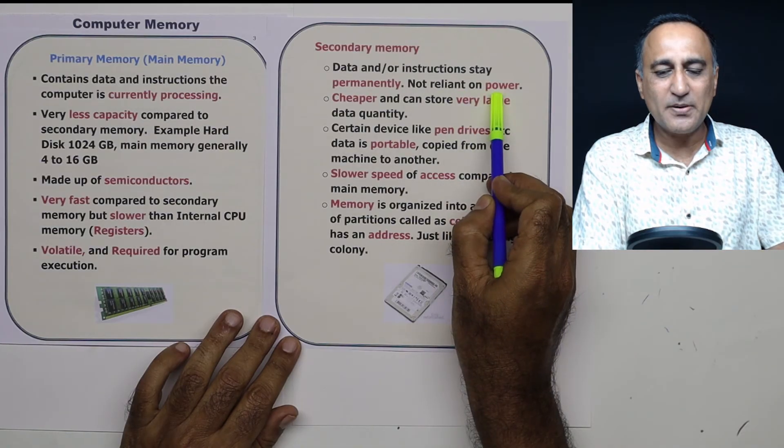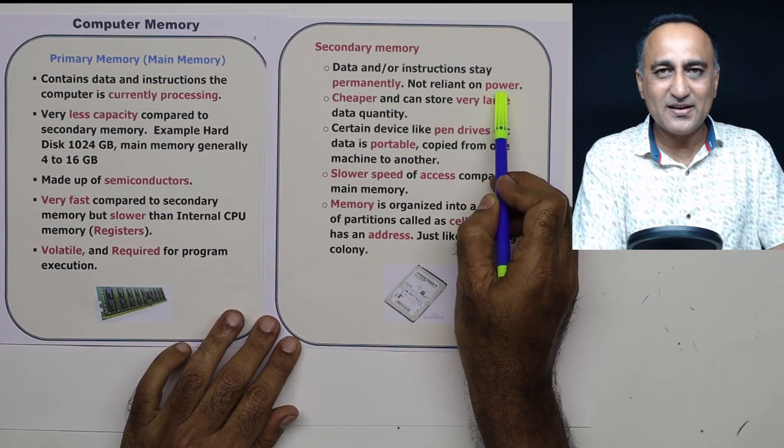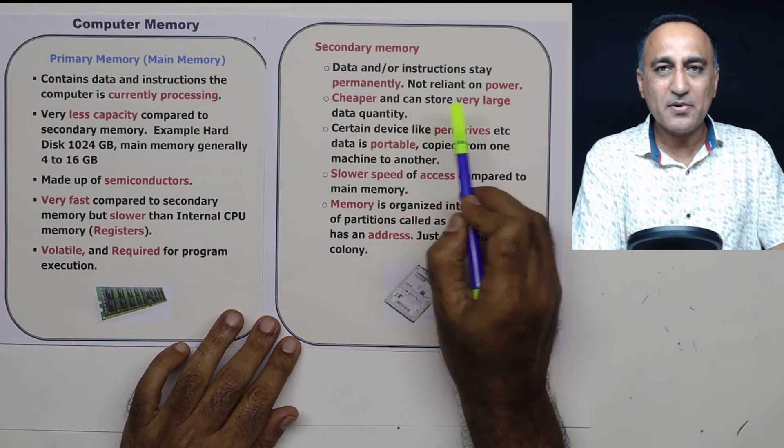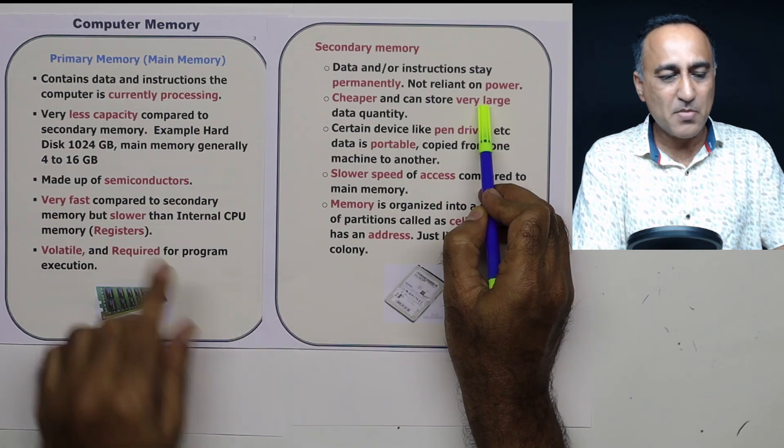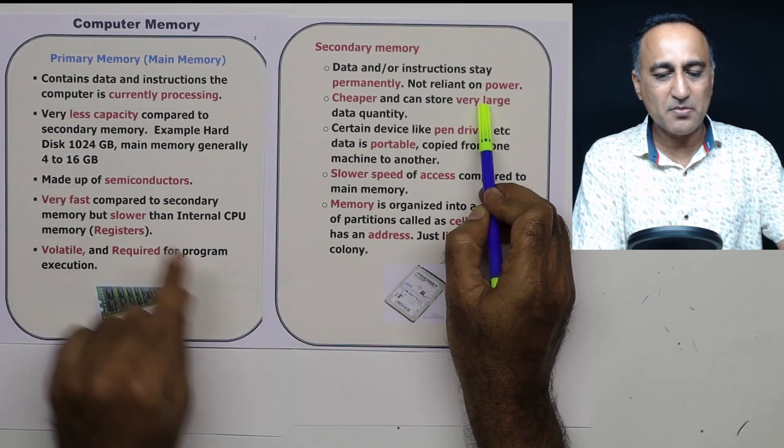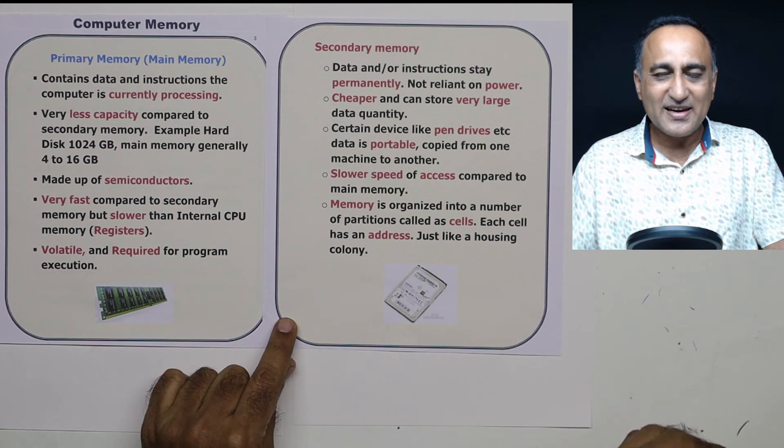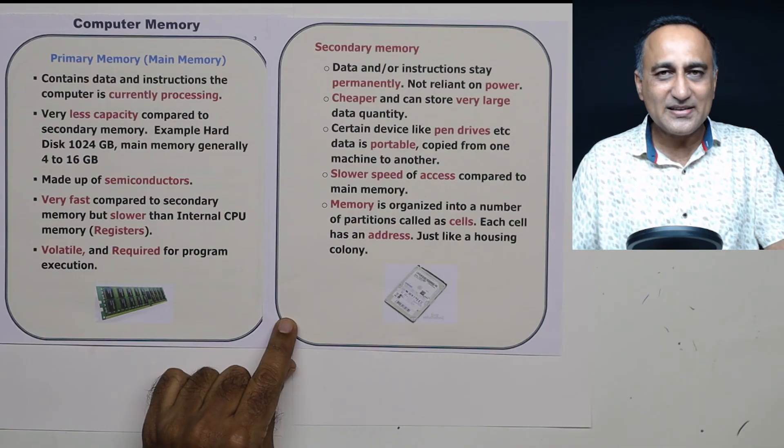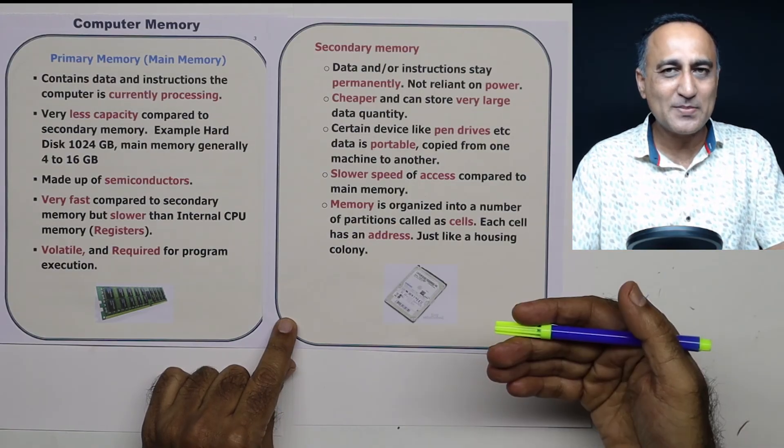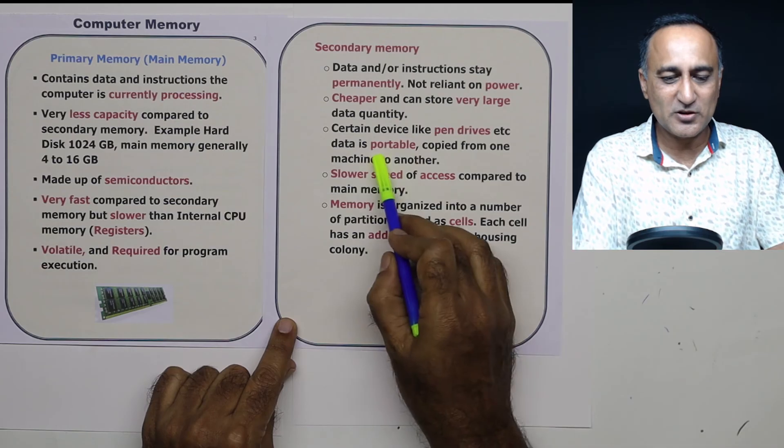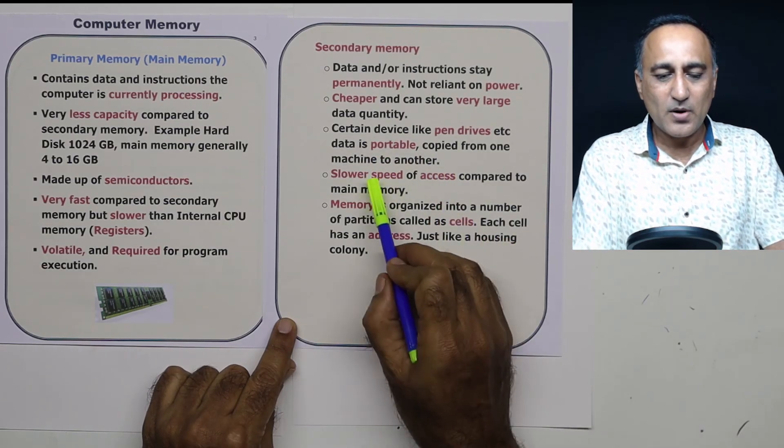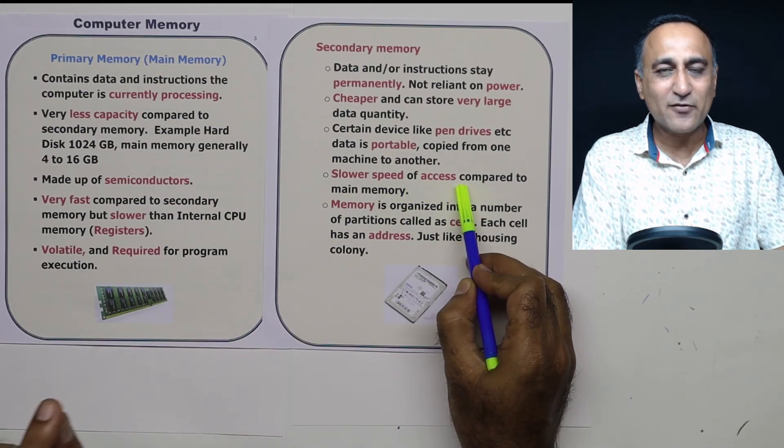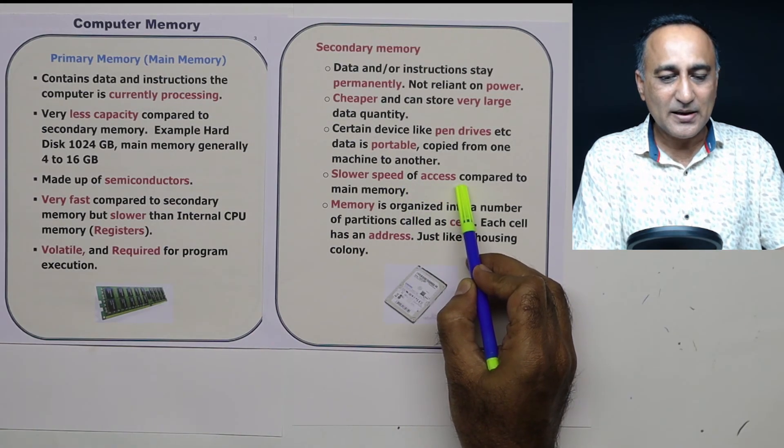Important. It does not depend on power supply. Even if the power is switched off, neither data nor programs are lost. Cheaper compared to main memory. The capacity is much larger as I had shown you compared to the main memory. Some of the secondary devices are portable in the sense, for example, if you have a pen drive, I can take data from your machine, copy to my machine. I can take programs from your machine, take it to my machine. So that's what you mean by the word portable. Now, I already mentioned the speeds are 100 to 200 times lesser than reading from the RAM or the main memory.